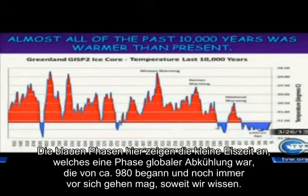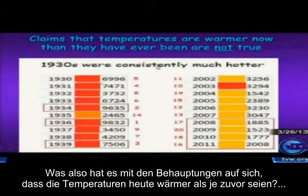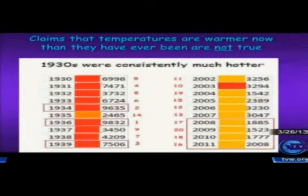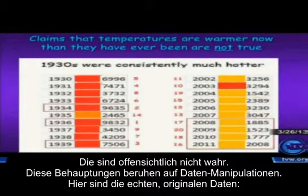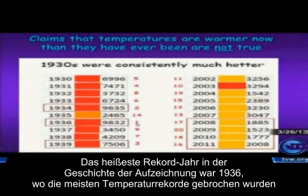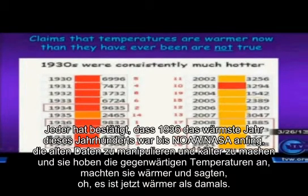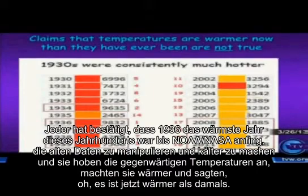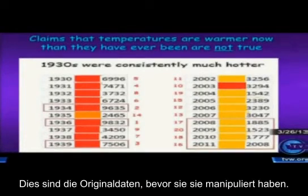The blue periods here are from the Little Ice Age, a period of global cooling that occurred from about 900 AD and may still be going on, for all we know. So what about claims that temperatures are warmer now than they have ever been? These are apparently not true, and those claims come from manipulation of data. Here is the real original data. NOAA and NASA began to manipulate the old data, making it cooler, then elevated recent temperatures and made them warmer, so they could claim it's warmer now than it was then. This is the original data before they manipulated it.